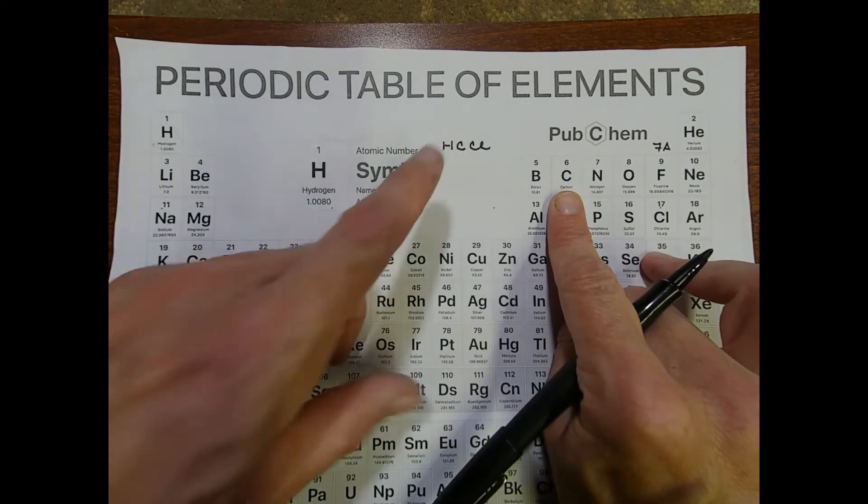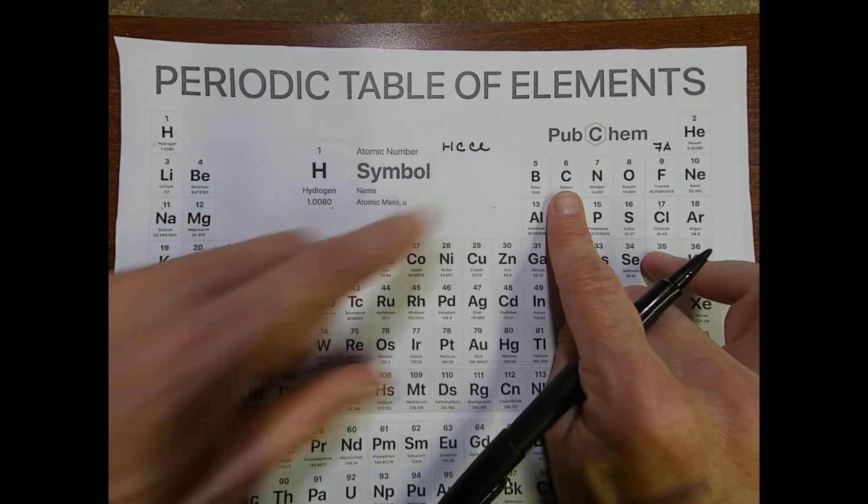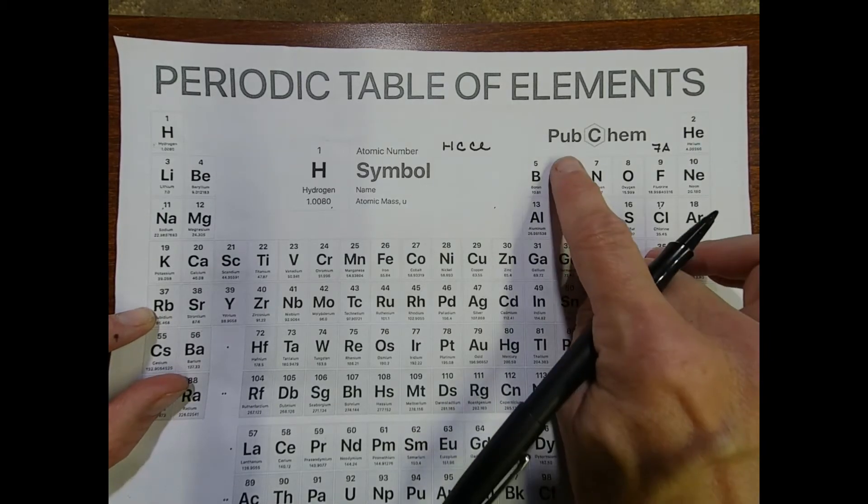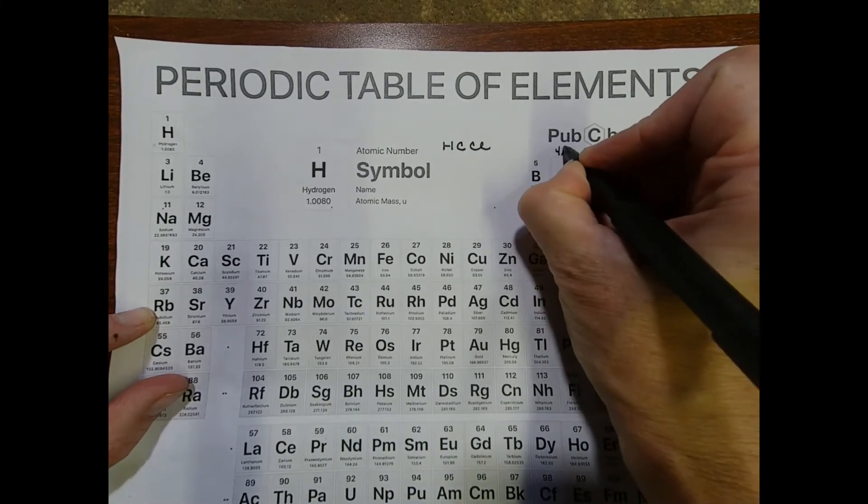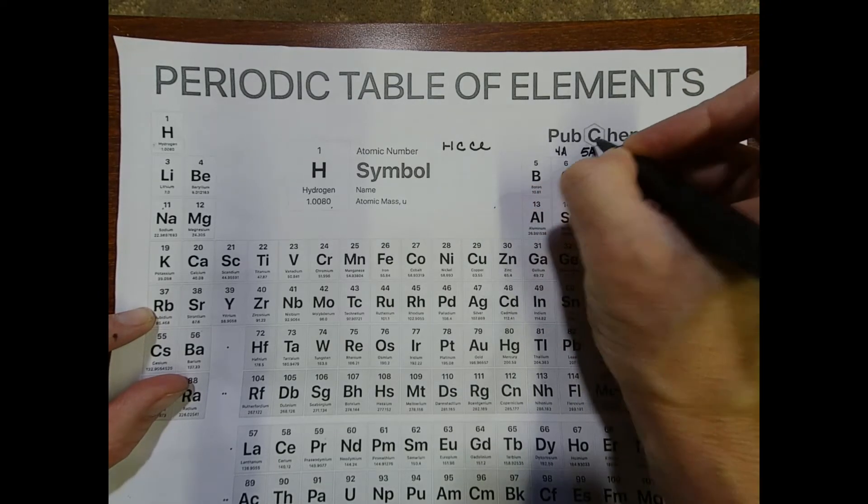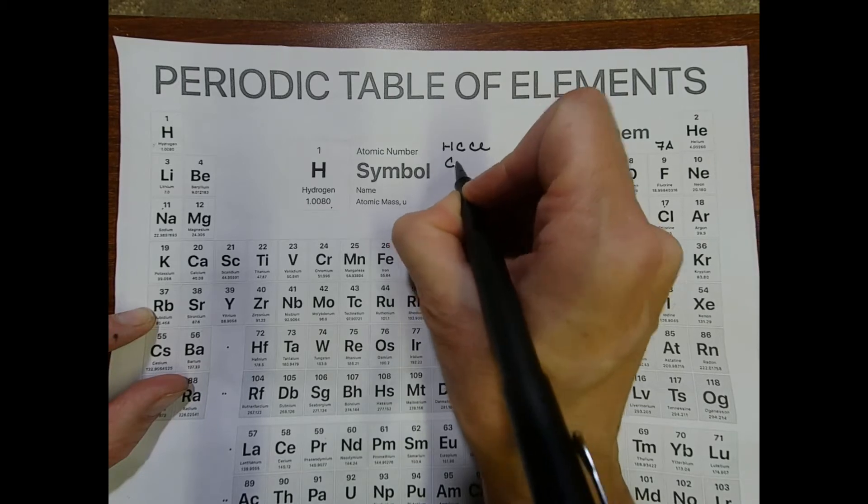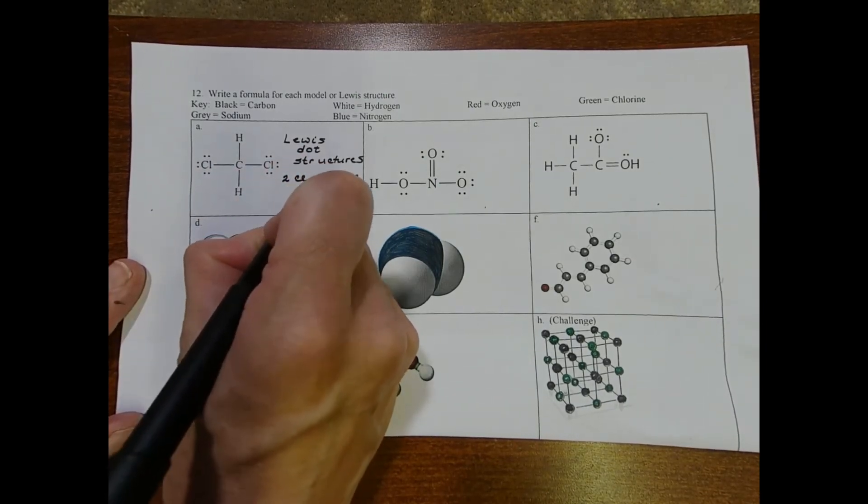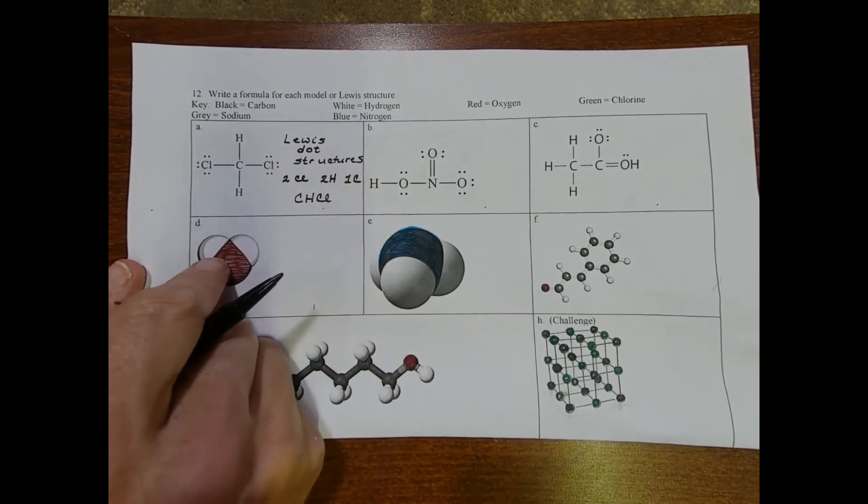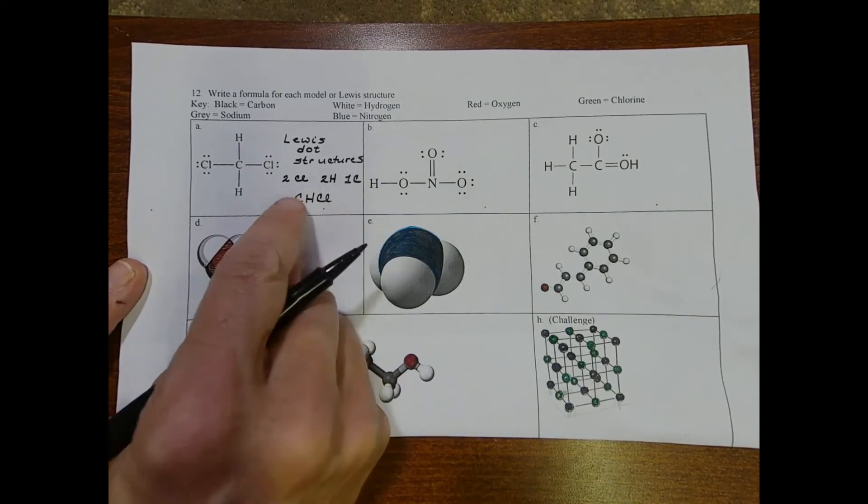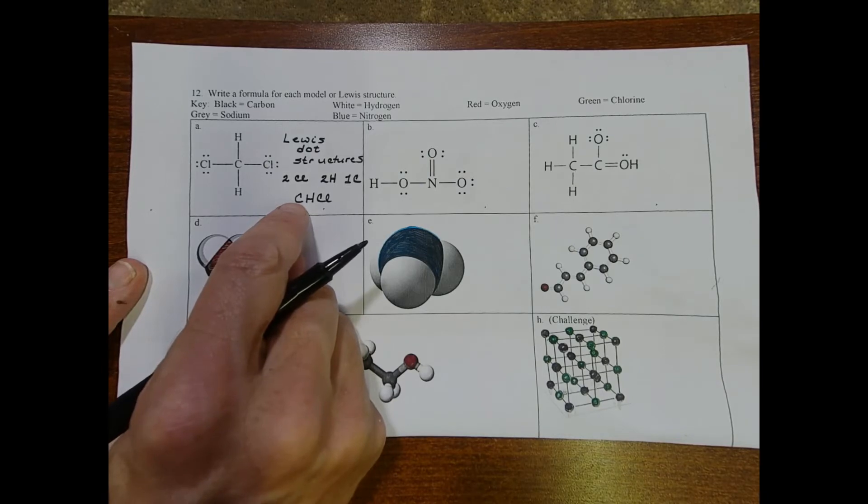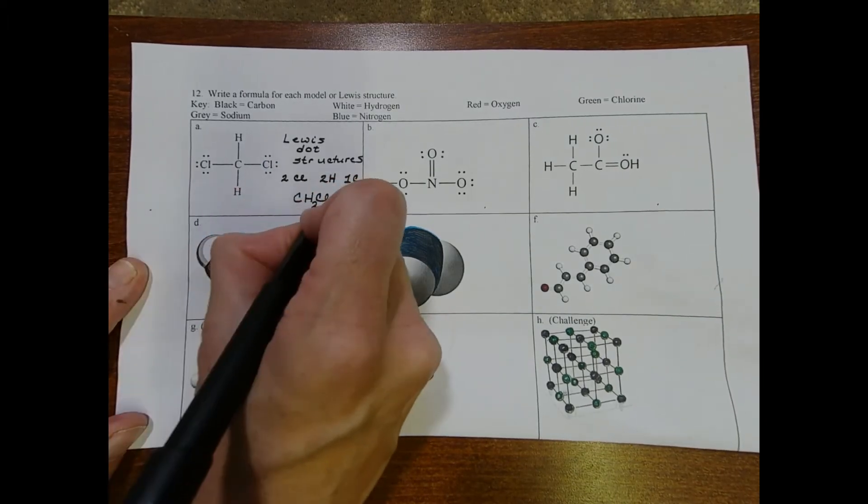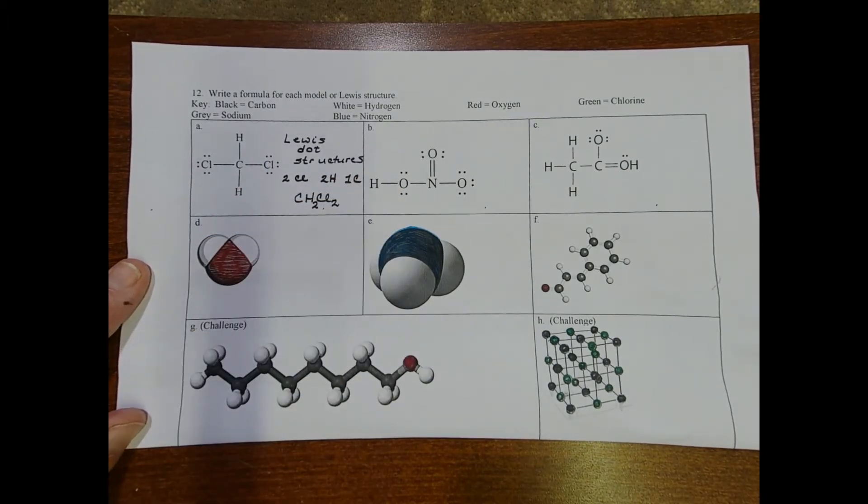So I might think the order is H, C, Cl, because I'm reading it from left to right. But remember, we have that guideline that tells us hydrogen is going to come after our 4A and our 5A elements. So I'm going to change the order and do C, H, Cl. Since I've decided that the order is C, H, Cl, I'm going to write that down. And then we count it 1 carbon, 1 is understood, so I don't need a subscript there, 2 hydrogens, so this is going to have a subscript of 2, and 2 chlorine, so I'll put a subscript there.